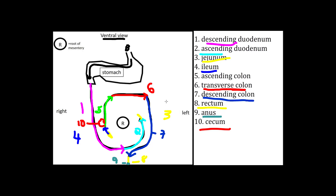A couple of other important relationships to note — there can be some variability, but the descending duodenum is generally found lateral to the ascending colon. Likewise, the descending colon is generally found to the left of and lateral to the ascending duodenum.